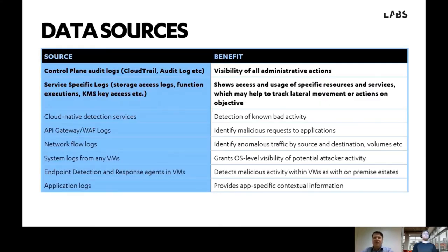Now, data sources. Before we start talking about where we put this data, there are a couple of key data sources to dive in on. First off, you've got the control plane audit logs, and secondly, the service-specific logs. By control plane audit logs, I mean CloudTrail for AWS, Audit Log in Azure terms, and Kubernetes. What these give you is visibility of all administrative actions taken within an environment — any API call that's made gets logged there. We can track creation, modification, deletion of resources, and access in some cases. If you only get one data source turned on in your environment, that's the one to pick.